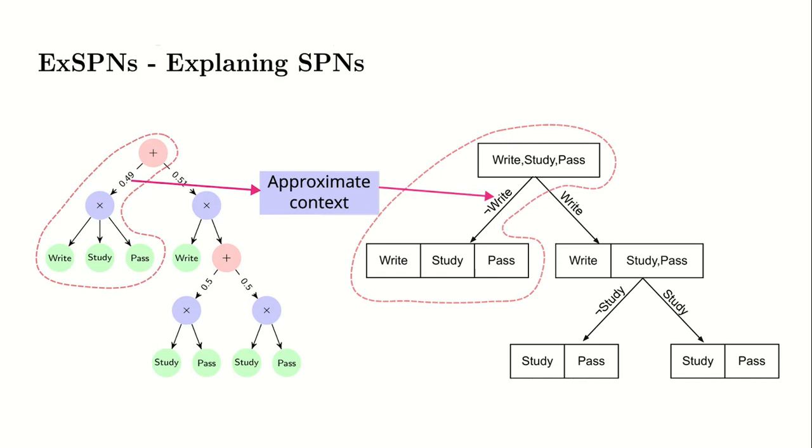To solve this problem, we propose the XSPN algorithm. Here, we estimate the context from sum nodes by comparing them with soft clusters.